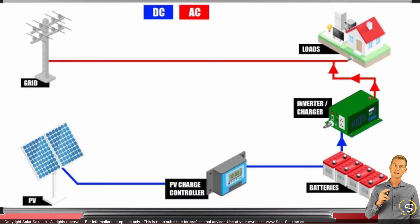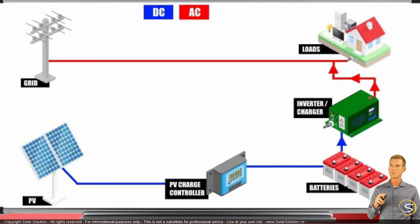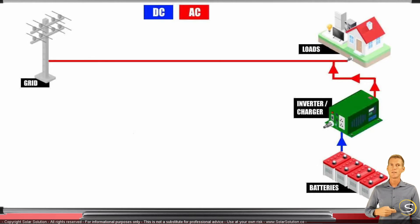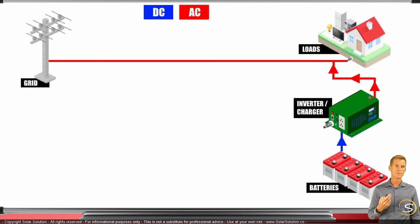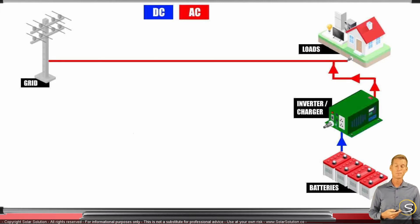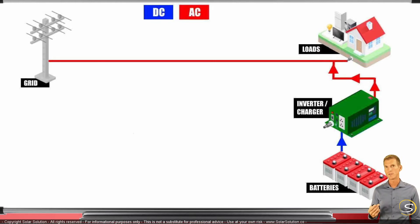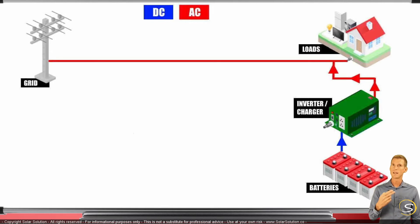A slight variation is that if you don't have solar power — just batteries and an inverter-charger — it becomes a grid-tied energy storage system, essentially a battery backup system. If there's a power outage or power cut, you can draw power from your batteries and power all the loads in your house until the grid comes back, at which point you use grid power again and recharge your batteries.